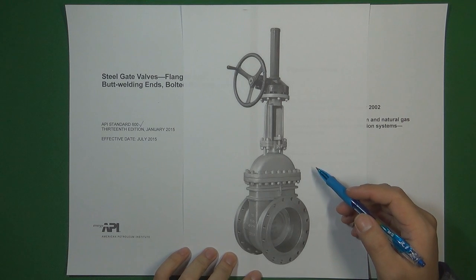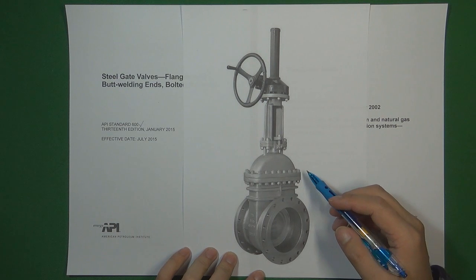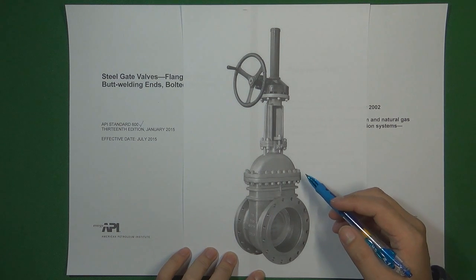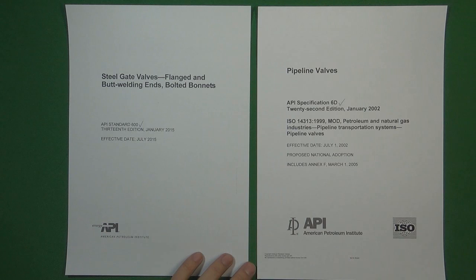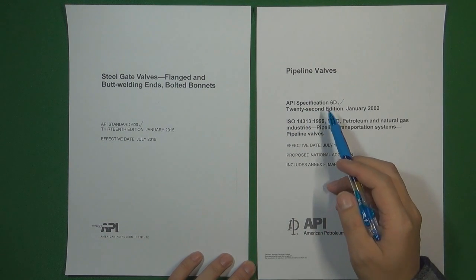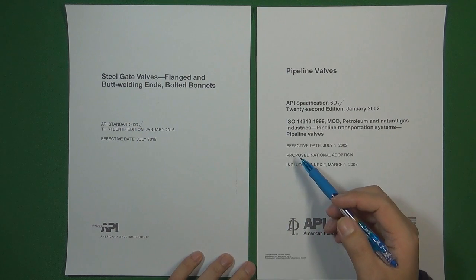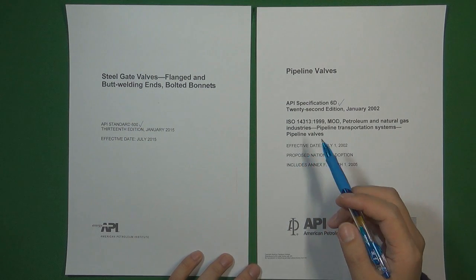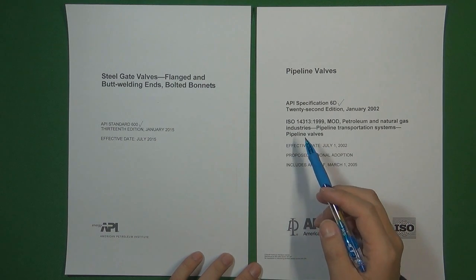Hello, welcome to Valve Channel. I'm Stephen. Gate valve is the most common valve type in the valve industry, and gate valves are very widely used in flow control systems. In this video, we are talking about what is the difference between two standards — API-60 and API-600 — and how to use these two standards to design a gate valve.